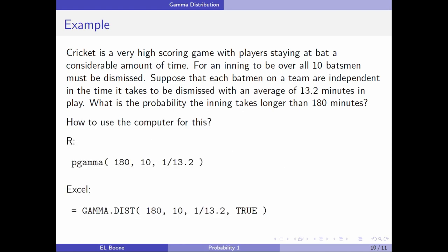How do you use a computer for this? In R, which is free software we've been using in other videos, you use the pgamma function: pgamma(180, 10, 1/13.2). Their formulation is a little bit different. In Excel, you use GAMMA.DIST(180, 10, 1/13.2, TRUE). The TRUE is because this is cumulative. This allows you to calculate these probabilities relatively easily.